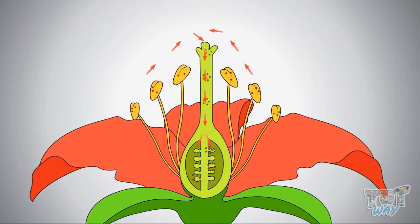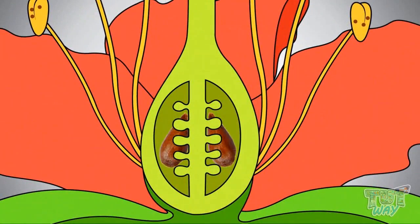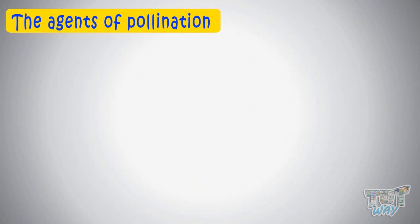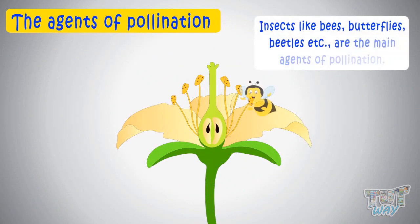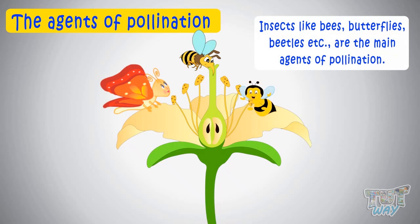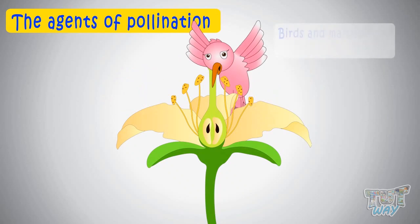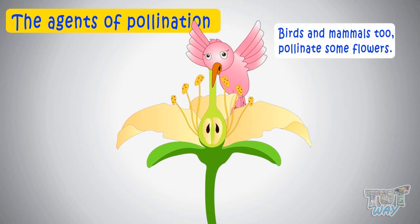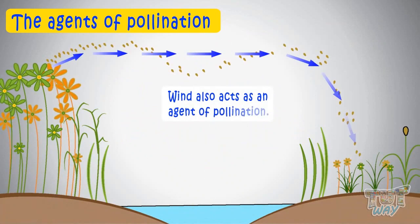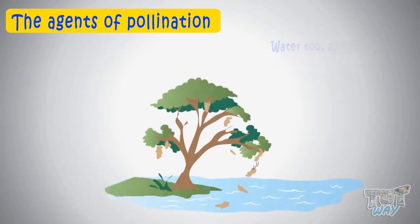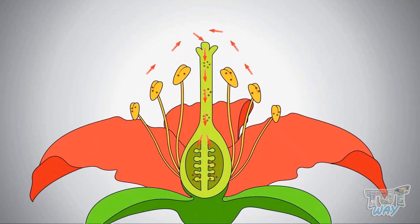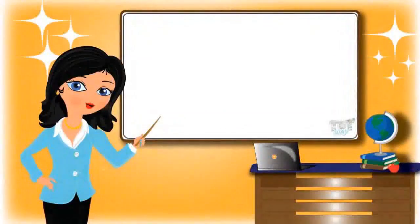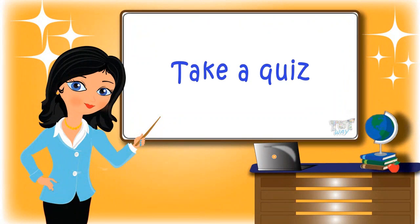So kids, we now know what fertilization and pollination are. Now we will learn about different agents of pollination. Today we learned about fertilization and pollination — go ahead and take a quiz to learn more. Bye-bye!